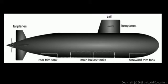Here's a diagram of a submarine, and not every submarine is exactly this particular size and shape, but the thing to point out here are these ballast tanks. There's what's called the main ballast tanks, and there's a couple of them here in the middle, and then the forward trim tank and the rear trim tank.